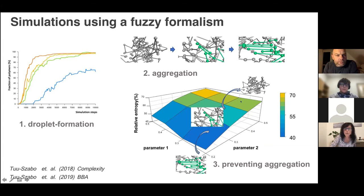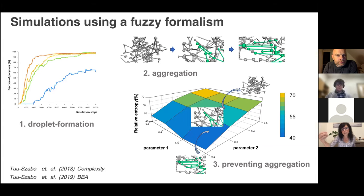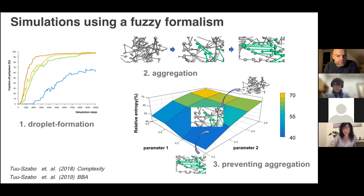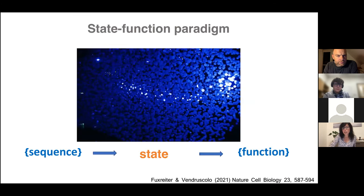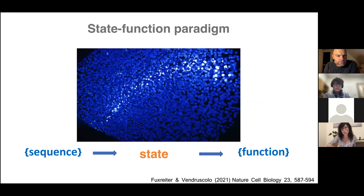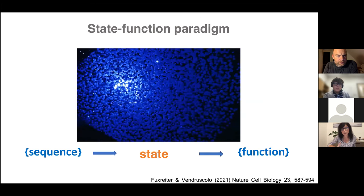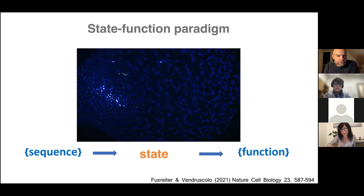We could also simulate something that prevents aggregation. For us it was a proof of principle that this fuzzy formalism works. The point is that it's not a utopia—we just need quantitative ways, in terms and concepts, to work with these systems and understand them, in order to put forward the state function paradigm to interpret protein function in the cell.